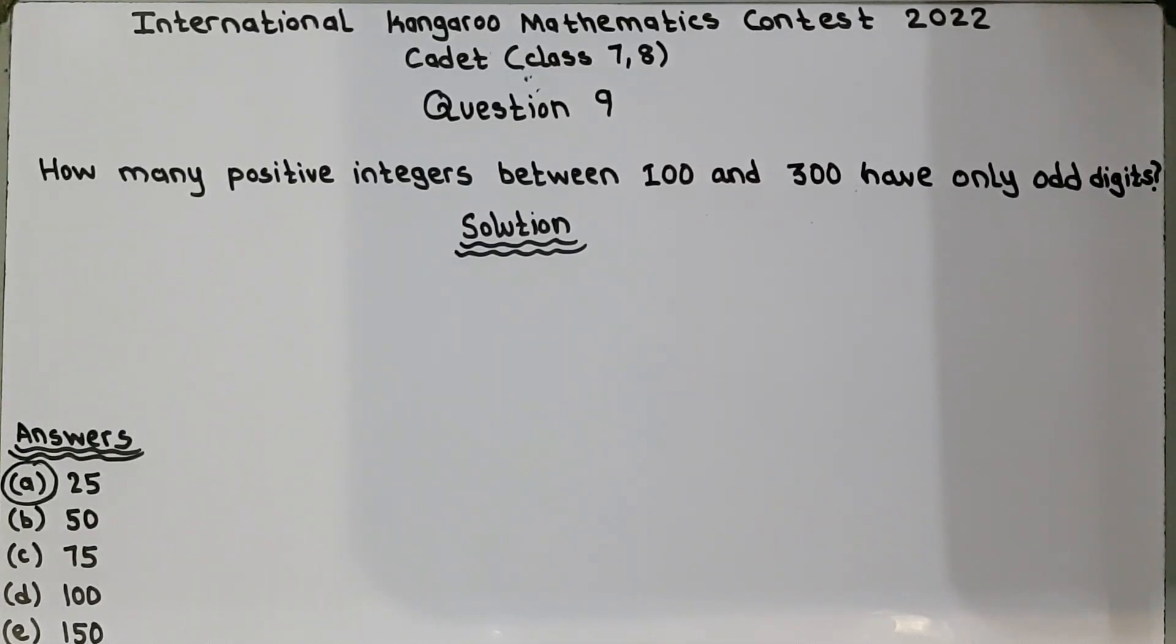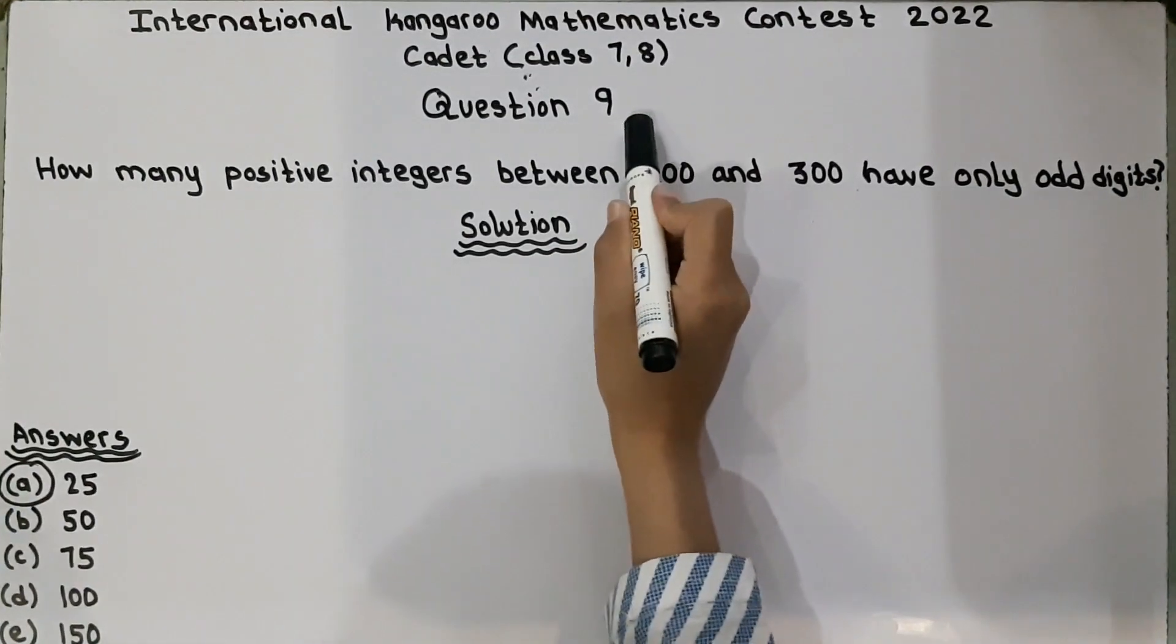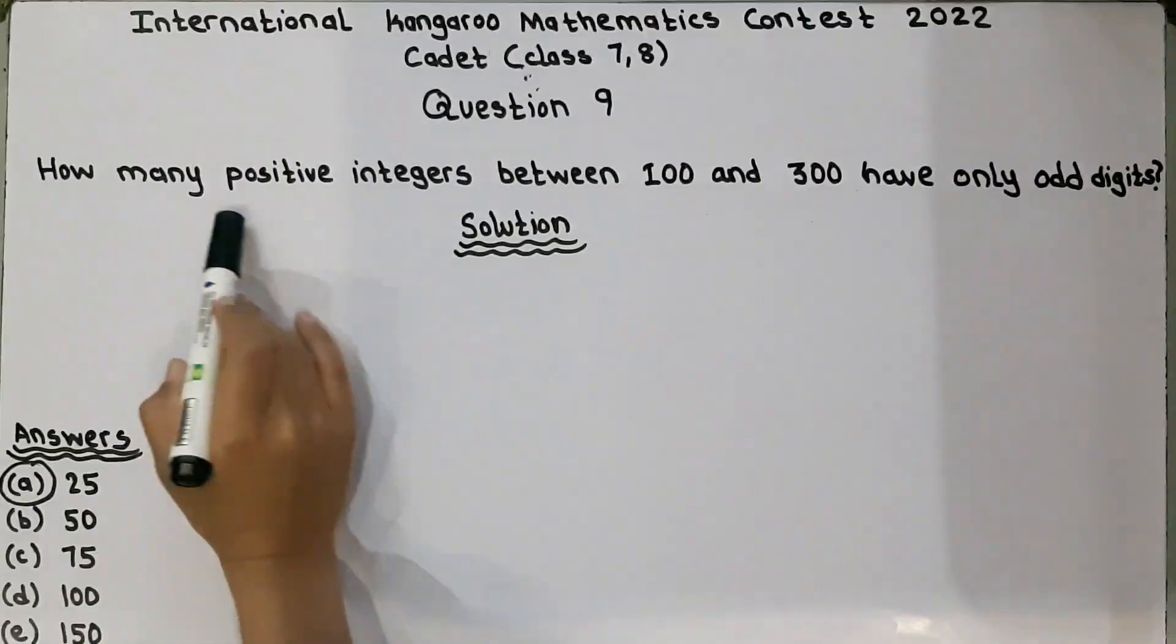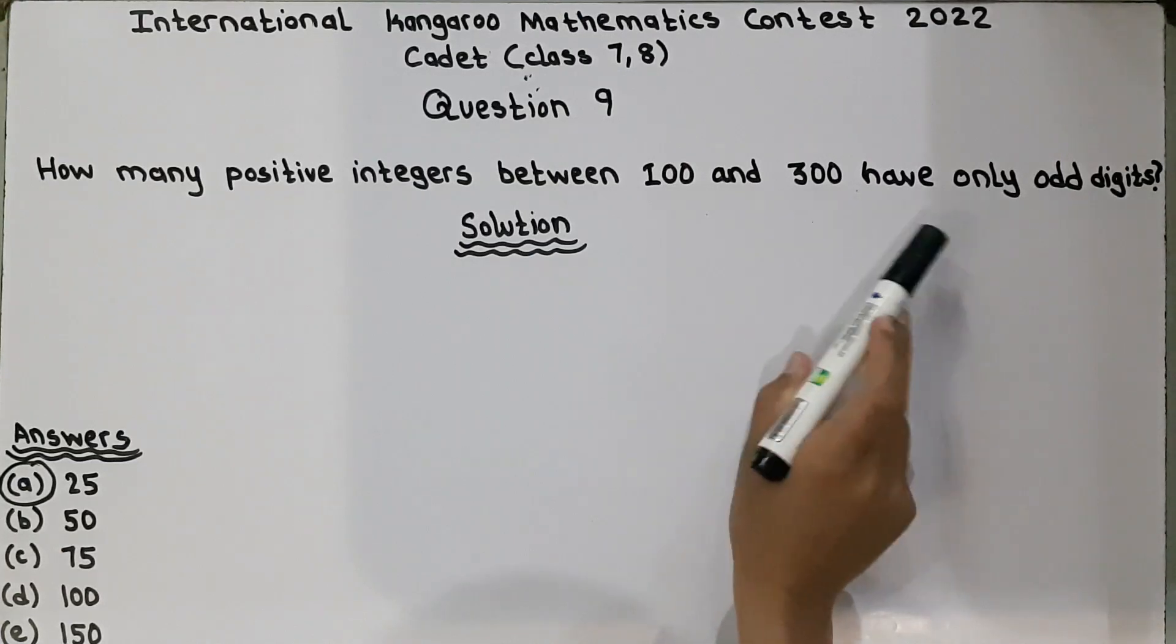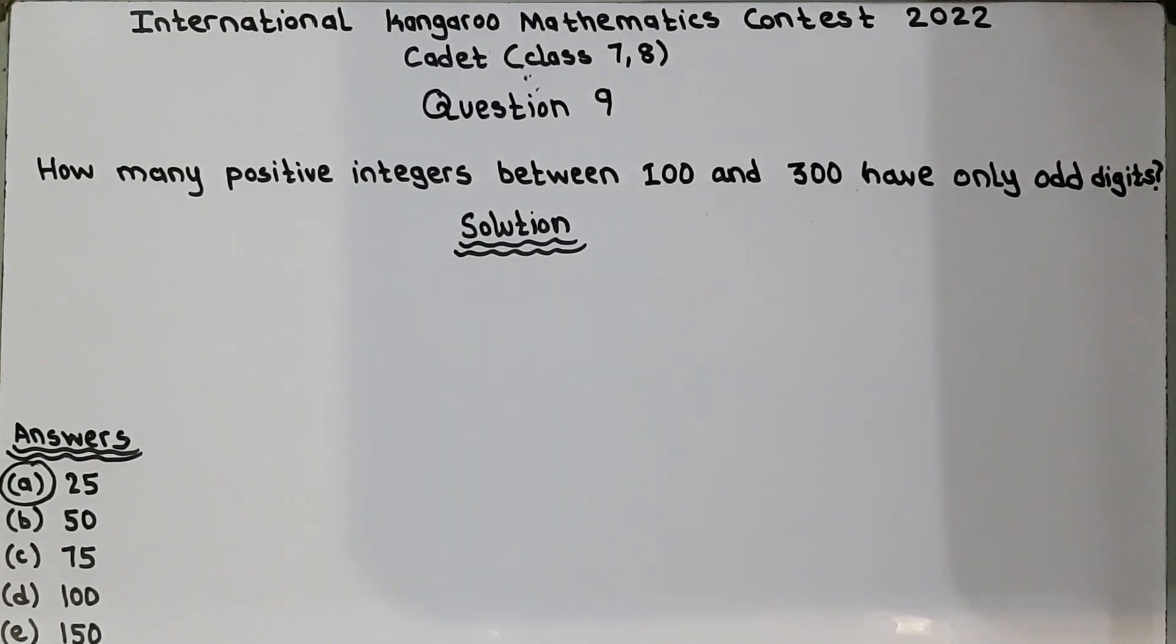Hi everyone, I am Hussain and I am back with another video on IKMC International Kangaroo Mathematics Contest 2022, Cadet level, Class 7 and 8. Question number 9: How many positive integers between 100 and 300 have only odd digits? Now they have asked how many digits are there between 100 and 300 which have only odd digits.